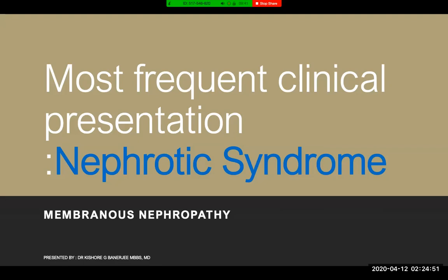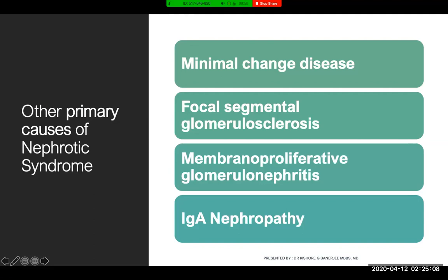The most frequent clinical manifestation is nephrotic syndrome, typically seen in the age group of 30 to 60 years. Nephrotic syndrome is a constellation of features: massive proteinuria, hypoalbuminemia, generalized edema or anasarca, hyperlipidemia, and lipiduria. When these features are seen together — particularly massive proteinuria more than 3.5 grams per 24 hours — the patient is diagnosed with nephrotic syndrome. Some causes are confined to the kidney; others are secondary to systemic diseases like diabetes mellitus, SLE, or amyloidosis.